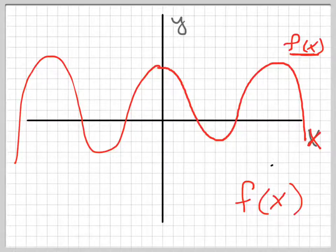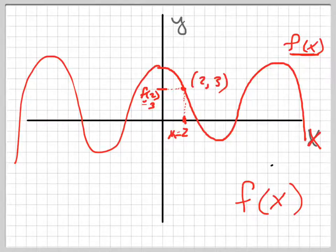So if x is 2, when x equals 2, f of x, if I go up to the graph and then follow that over, that's f of 2, whatever that value is. So 3, f of 2 equals 3. So this point right here is 2 comma 3. When x equals 2, y equals 3.